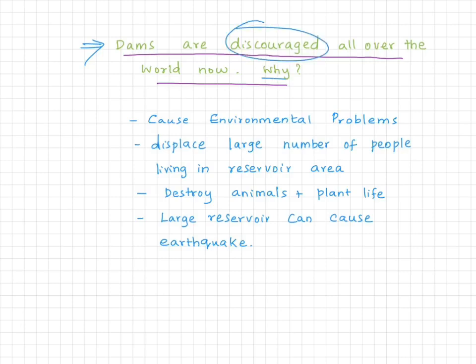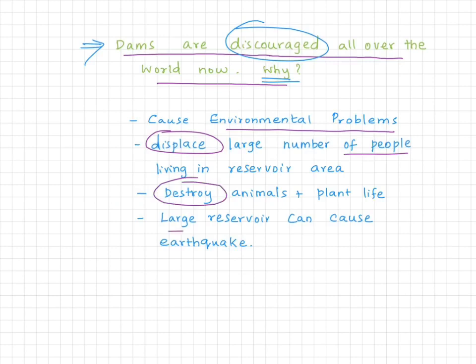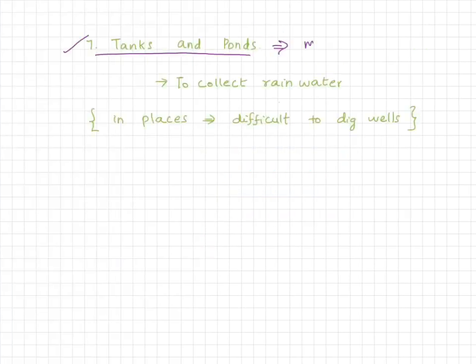In recent days, environmentalists discourage the construction of dams because constructing big dams causes environmental problems, displaces people, destroys many animals and plant life, and large reservoirs can also lead to earthquakes.